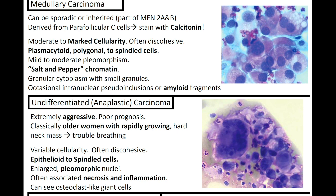Last up, we've got medullary carcinoma. It can be sporadic or inherited, and can be part of MEN2A or MEN2B. This entity is derived from the parafollicular C cells and stains with calcitonin. Medullary carcinoma can have moderate to marked cellularity and is often discohesive. Cells can be plasmacytoid, polygonal, and spindled with mild to moderate pleomorphism. Don't forget the salt and pepper chromatin, and occasionally you can have intranuclear pseudo-inclusions or amyloid fragments. Useful stains include calcitonin or Congo Red for the amyloid.